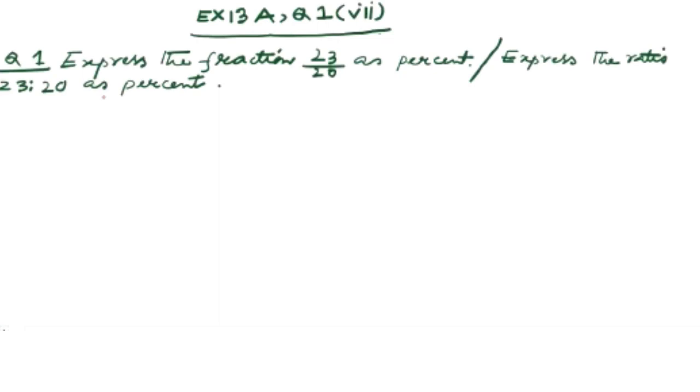Question number 1, my dear children: Express the fraction 23 by 20 as percent, or express the ratio 23 is to 20 as percent. In both cases the solution remains same. We'll just multiply the fraction with 100 to get its percent. So I'm writing the question: 23 is to 20, this is equal to 23 by 20.